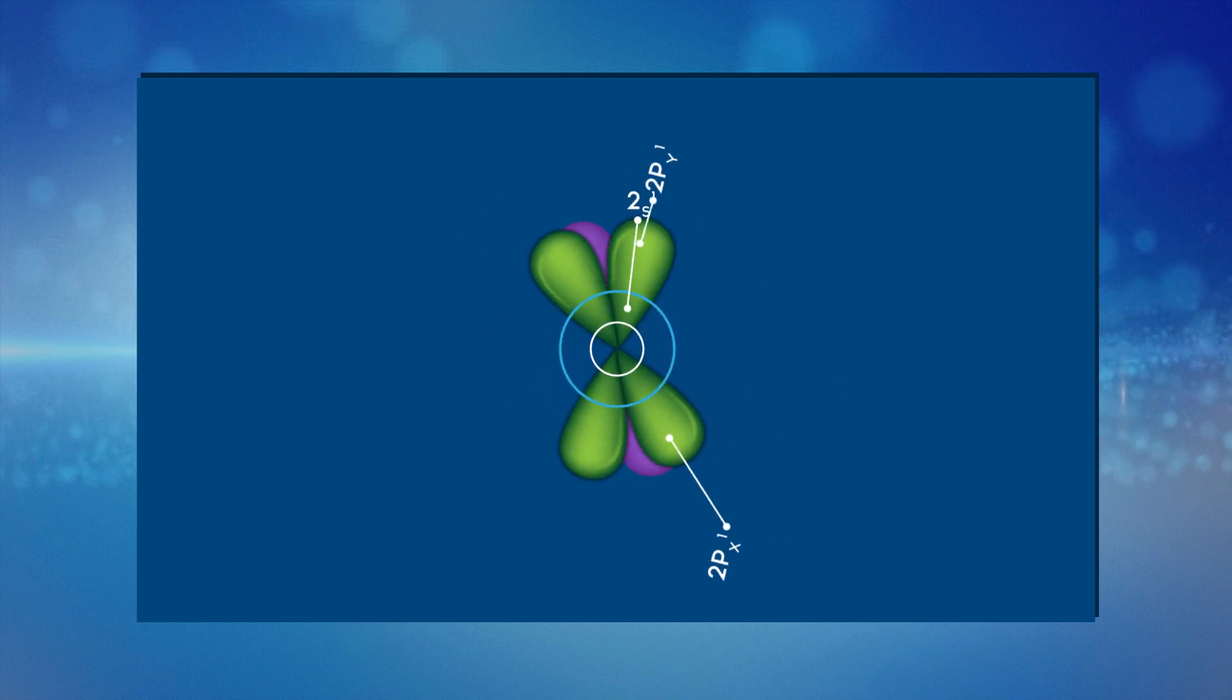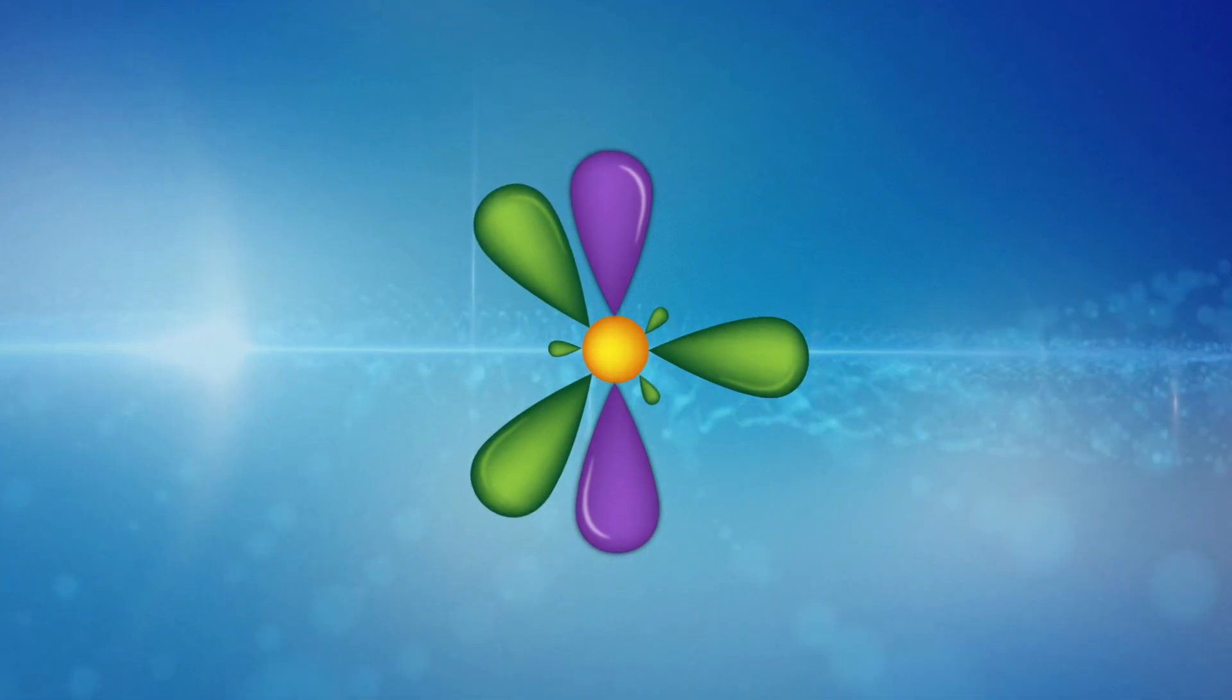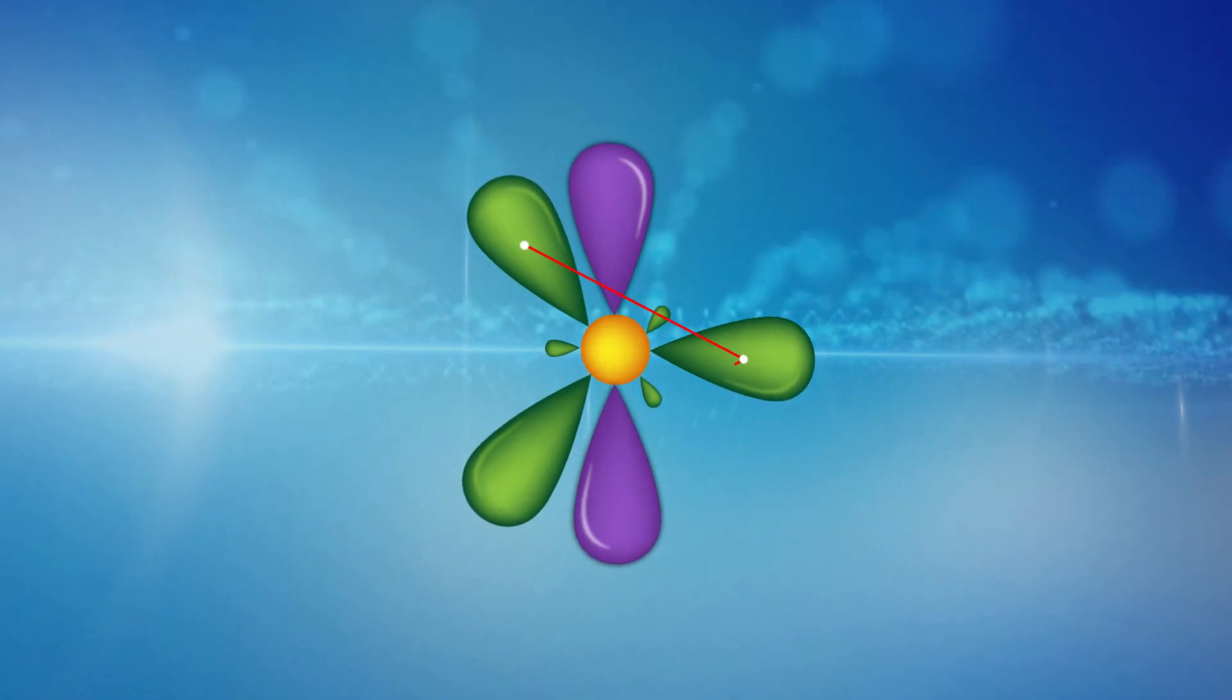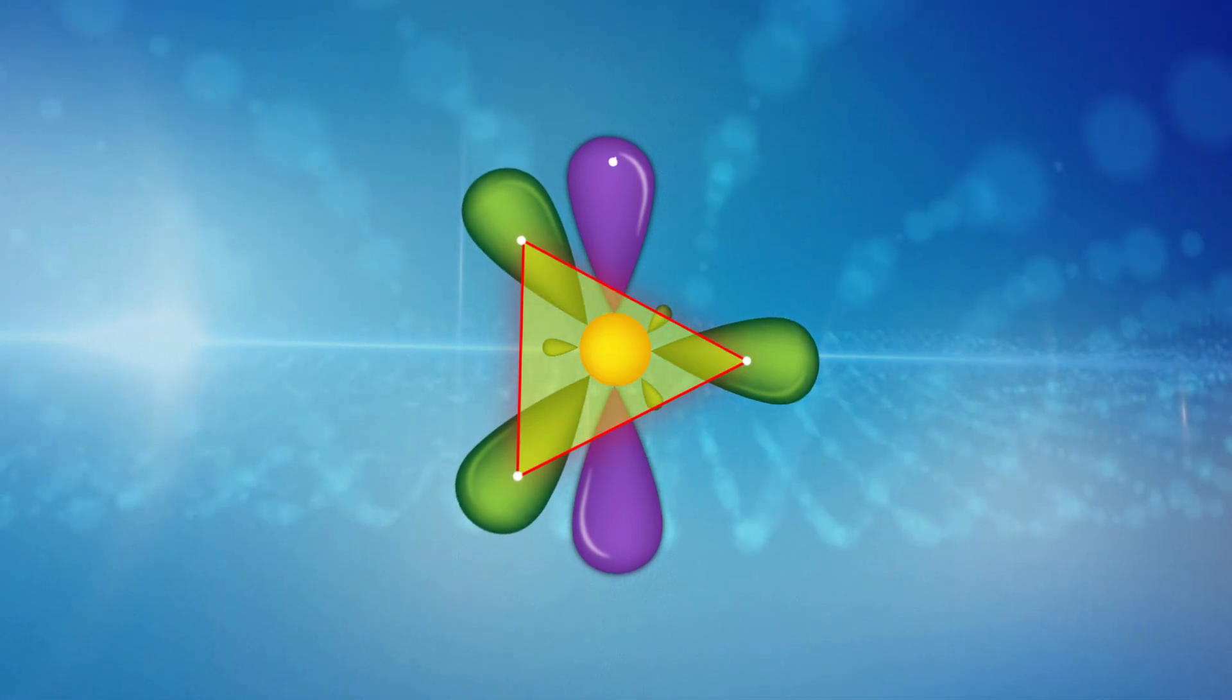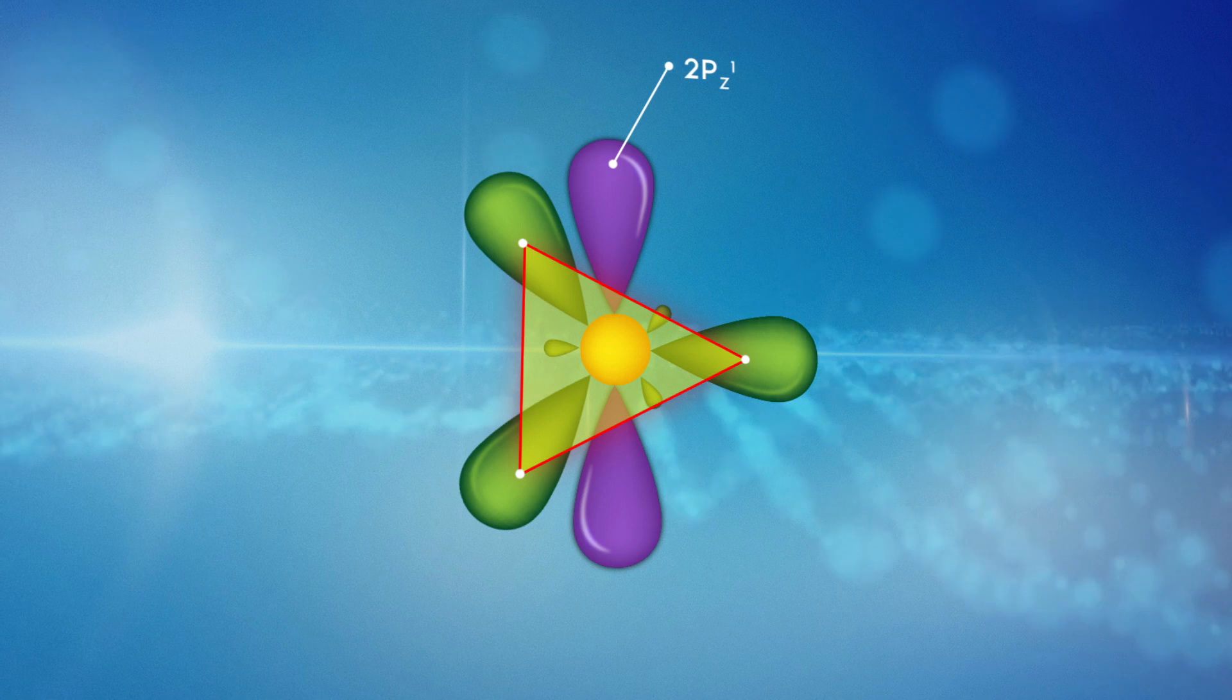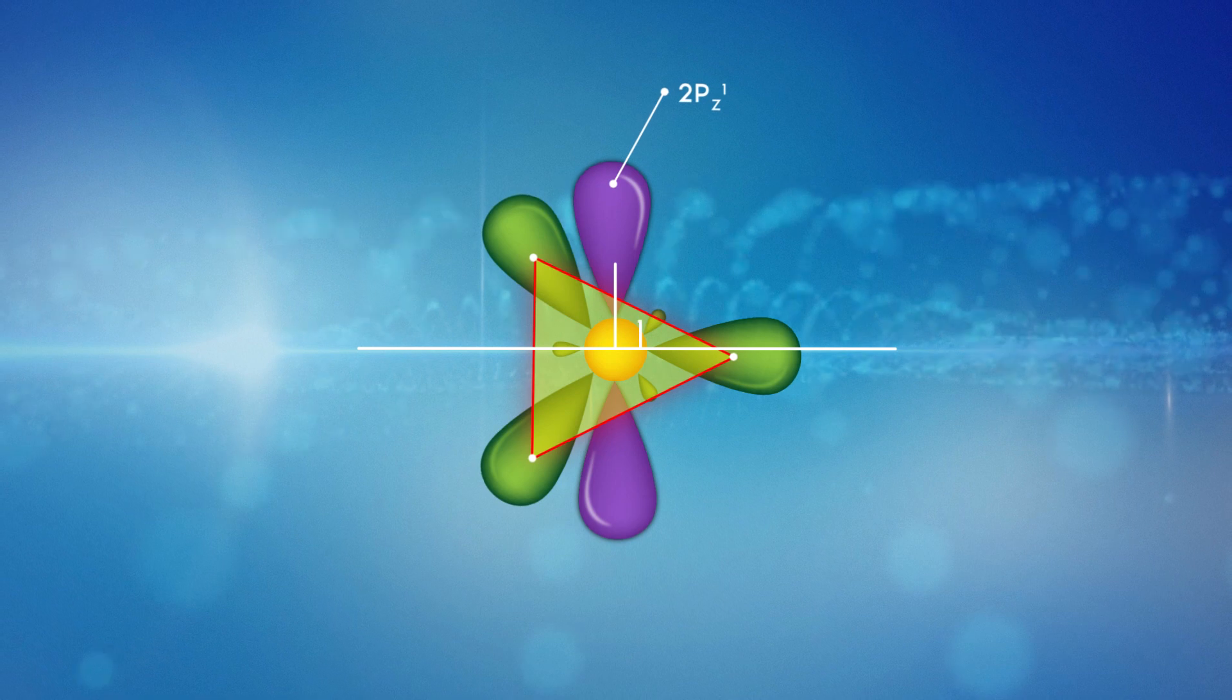When the atom is hybridized, three sp2 hybrid orbitals are formed. These hybrid orbitals form an equilateral triangle. The 2pz orbital, which was not involved in the hybridization, is at right angles from the plane.